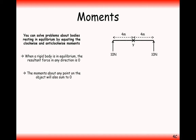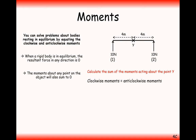This pivoting balancing act here is in equilibrium because we can clearly see that the anticlockwise moments will balance out with the clockwise moments. They're both 40, so this model here is in equilibrium.